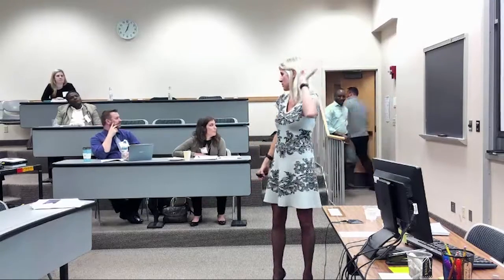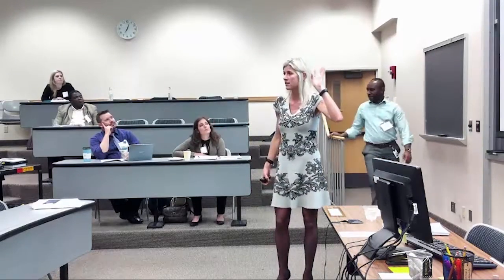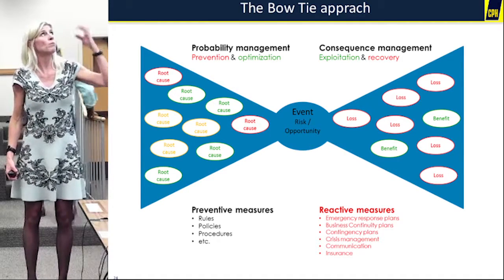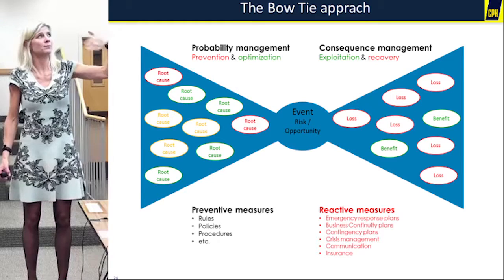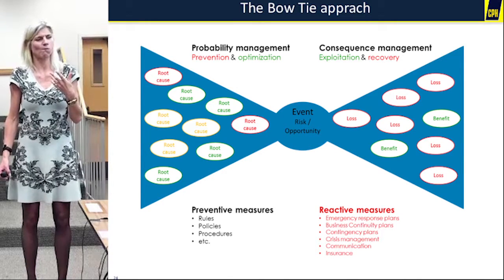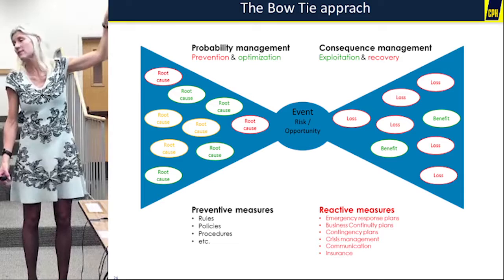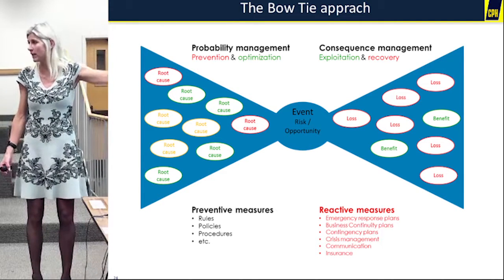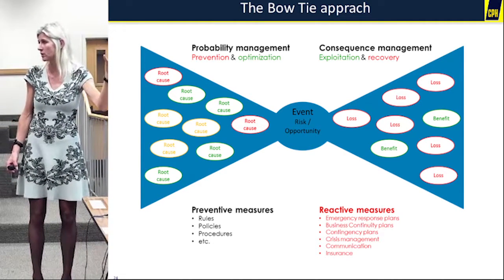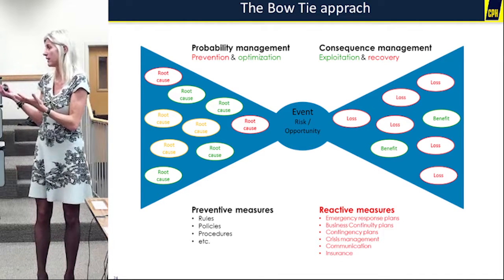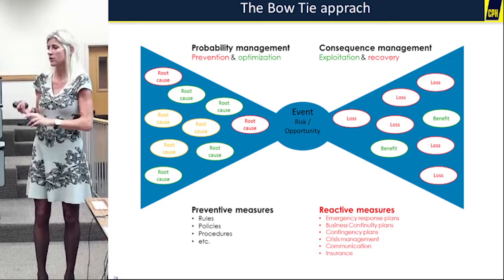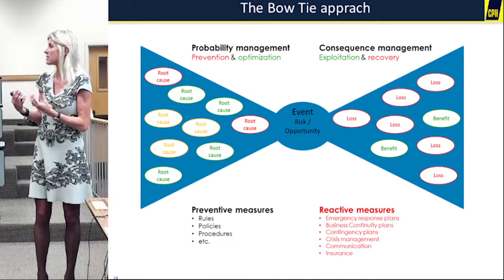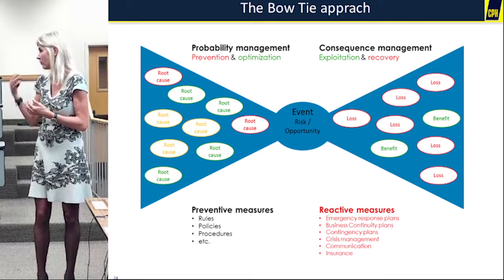It takes — maybe some of you already know this — the bow-tie approach. It starts with the risk itself, the event, which can be a risk but can also be an opportunity. So sometimes something goes better than you expected — it's an opportunity — but it's still an event, maybe triggered by an incident, but still something that you hadn't planned on or expected.